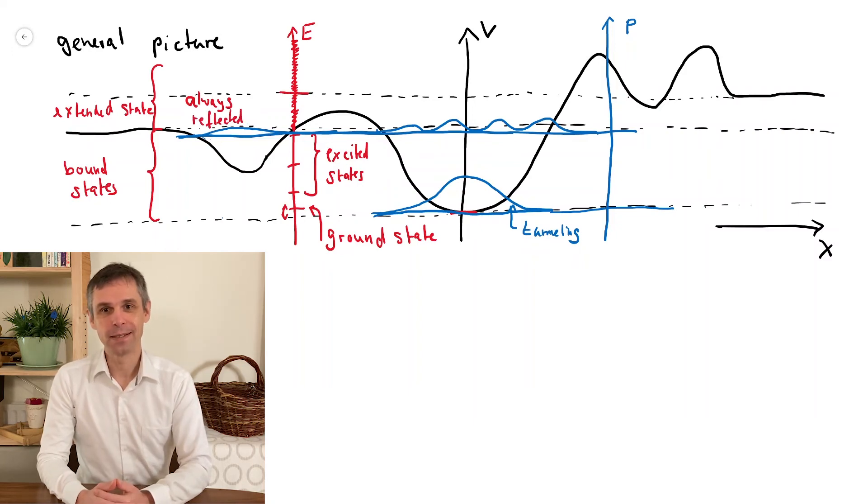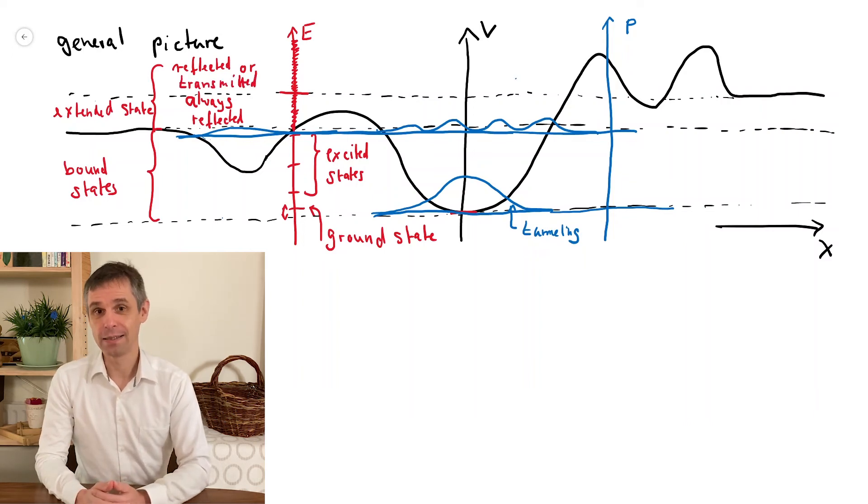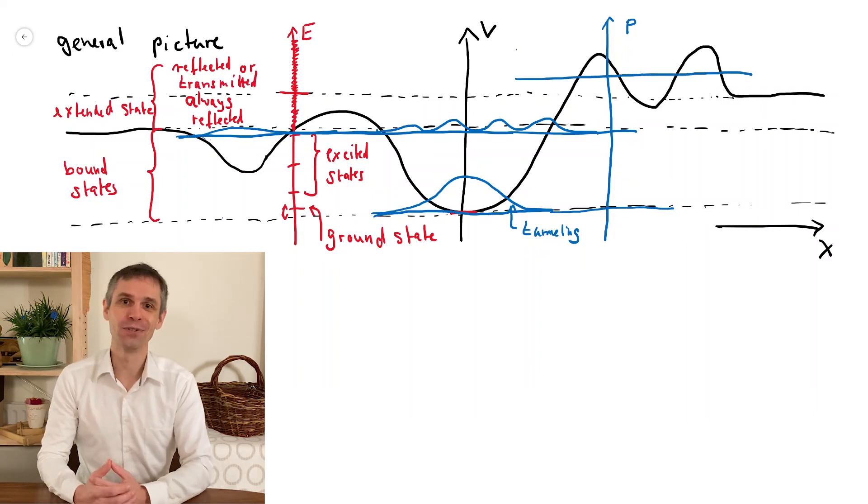And above this, we have the energies where we can have both reflection and transmission. And this then can again involve tunneling through classically forbidden regions.